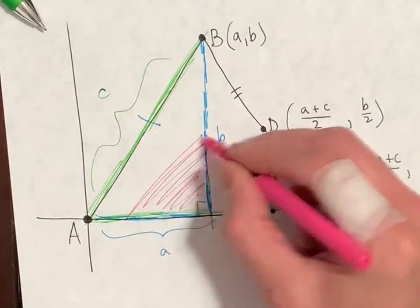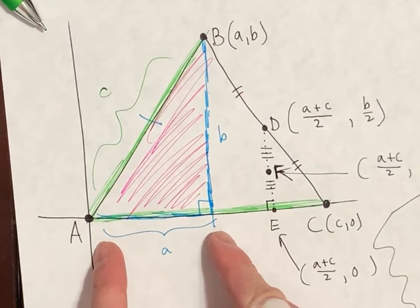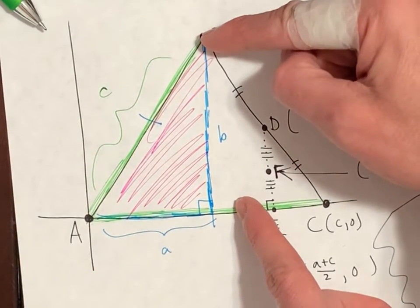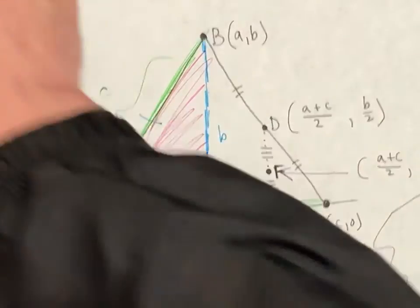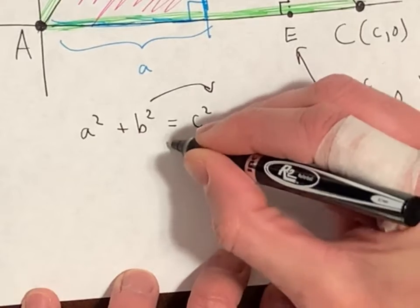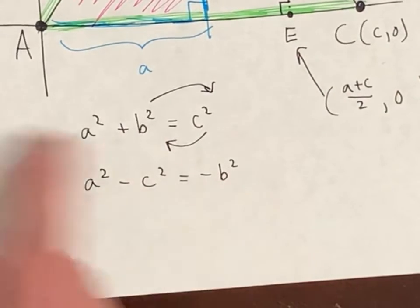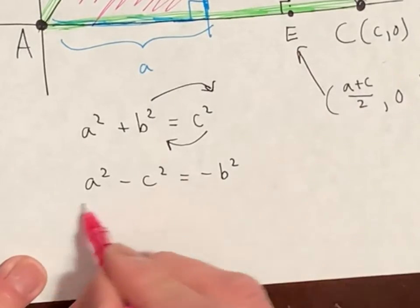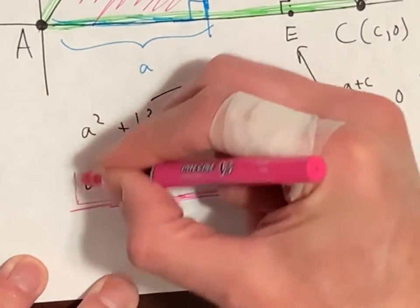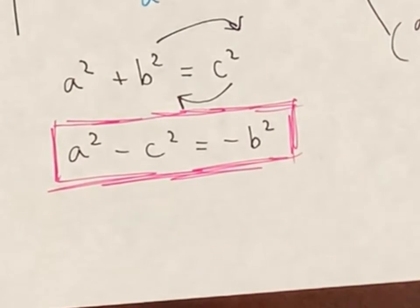We can use Pythagorean theorem on that pink triangle, where it's little a squared plus little b squared equals little c squared. Now let me do something kind of weird. Let me move this to this side and that to that side. A squared minus c squared equals negative b squared. I'm going to put a pink box around this. We will come back to this pink box at the very end.